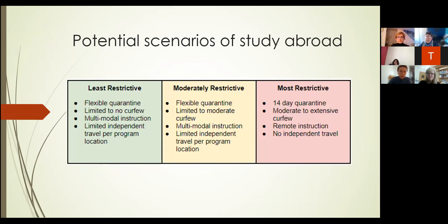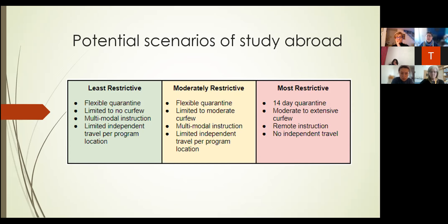We're modeling our contingency plans similar to what's on campus, but translating that into the individual locations where you'd be studying abroad — least restrictive, moderately restrictive, and most restrictive. It's been challenging because we're basing some decisions on the current situation, while being very hopeful that today's reality will look significantly different in August or September. Nevertheless, to do our due diligence we have to plan for the most restrictive scenario, and our on-site staff are working diligently to think through three different scenarios for each program.